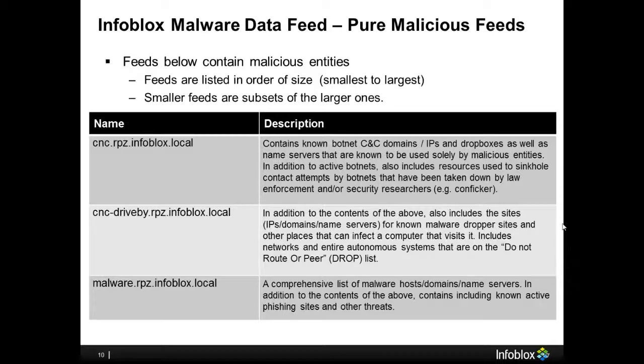Here is a copy of the Infoblox malware data feed service. Infoblox offers customers a choice of up to seven reputational feeds, listed from smaller to larger size. The CNC-RPZ-Infoblox.local feed is a very small, efficient feed designed to catch botnets, command and control servers, drop boxes, and name servers. The malware.rpz-infoblox.local feed builds on the CNC feed by adding those feeds as well as another level of information on malware host and domain servers. This gives customers a choice of picking the level of service that fits their needs.